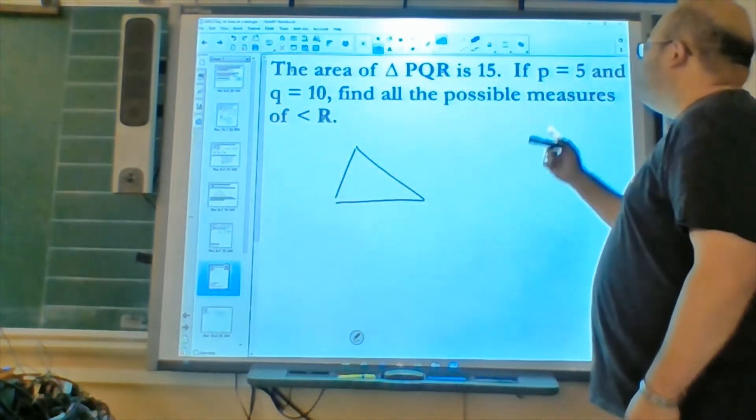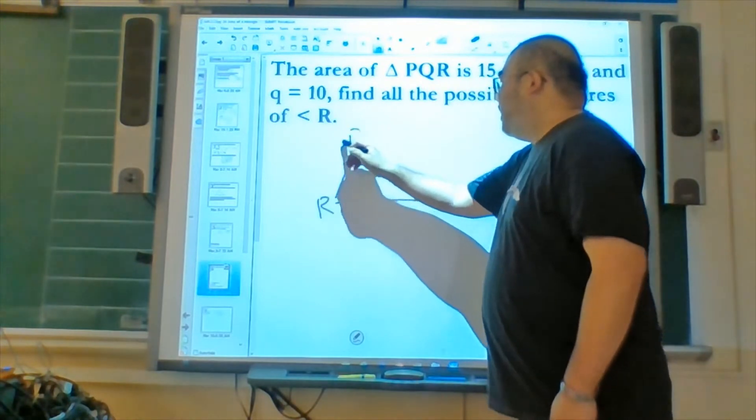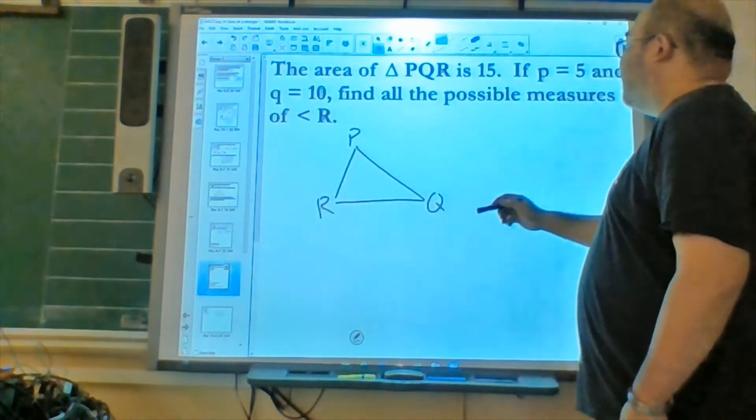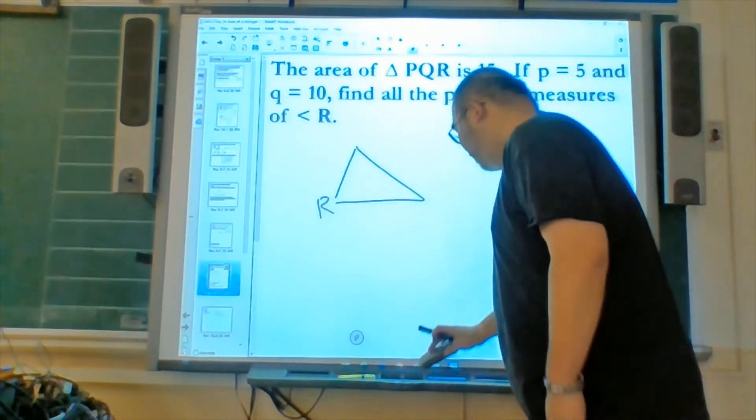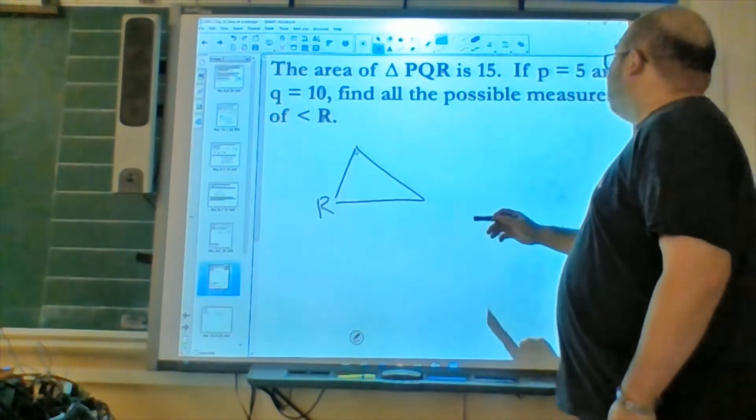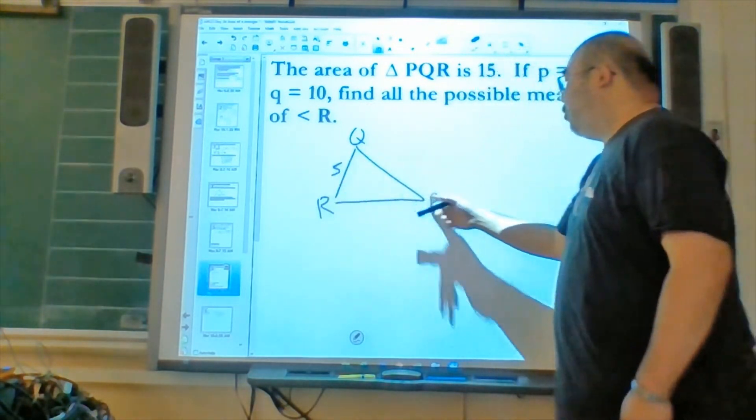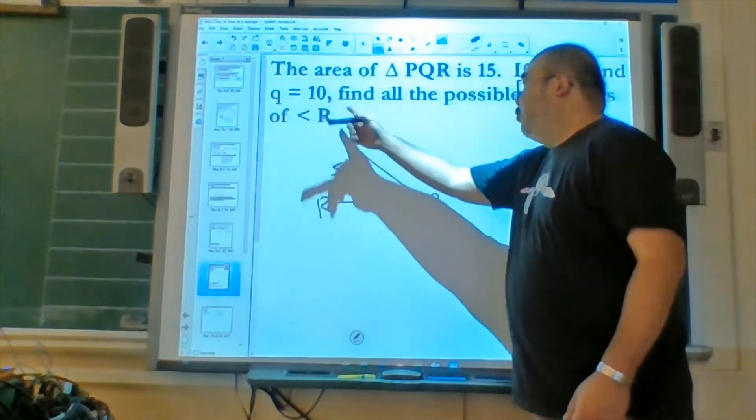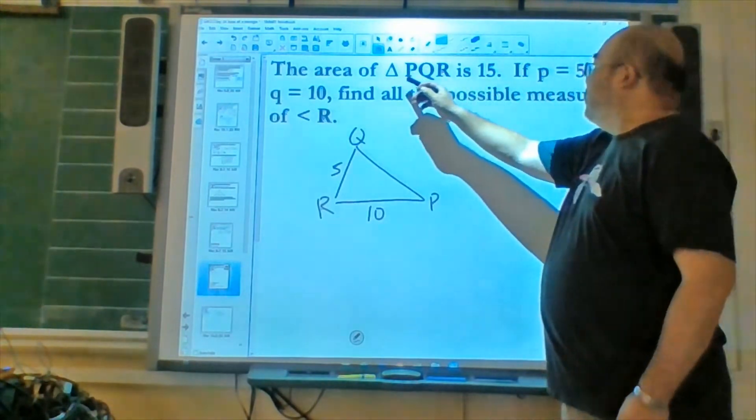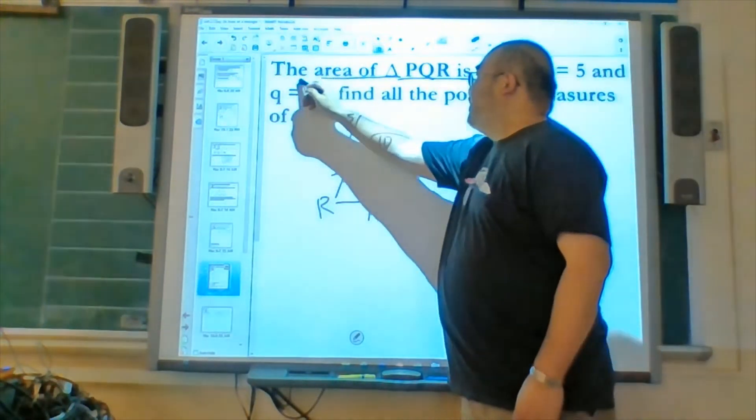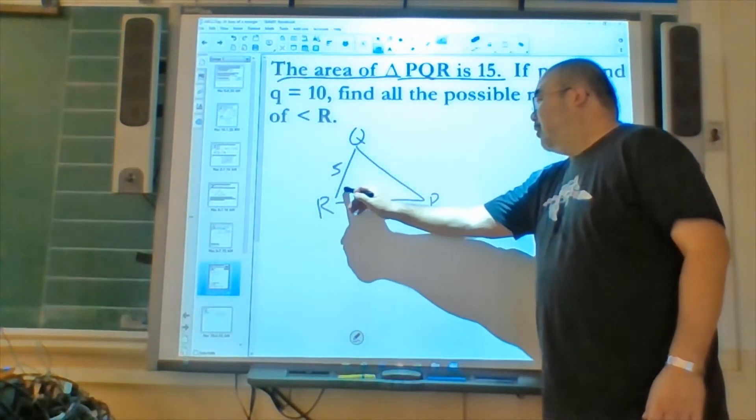So here is our triangle PQR. Since we're looking for R, I'm looking for R here. Here's P, and here's Q. So lowercase p is 5. Maybe I should switch this so it looks a little more like it should be. Since the side is 5, I'll put P and Q here, because the side opposite of angle P is lowercase p, which is 5, and the side opposite angle Q is lowercase q, 10. And we know the area is 15. We're trying to find this angle here, R, we'll call theta.